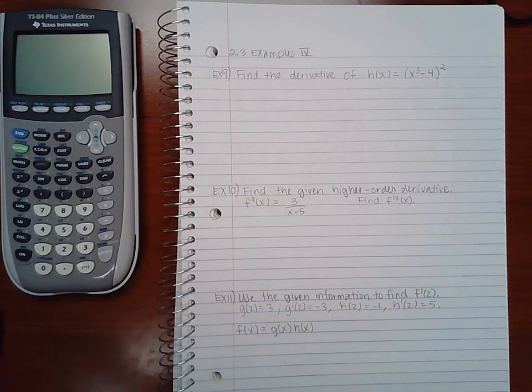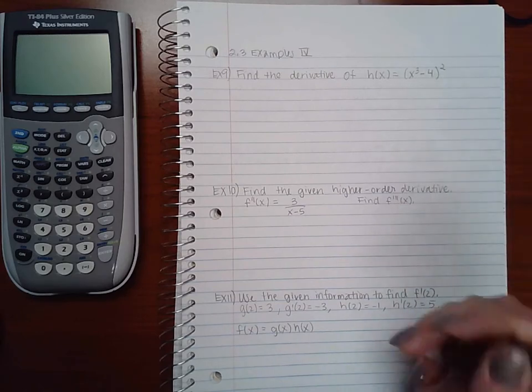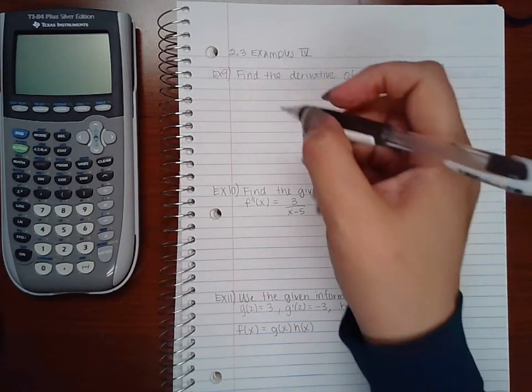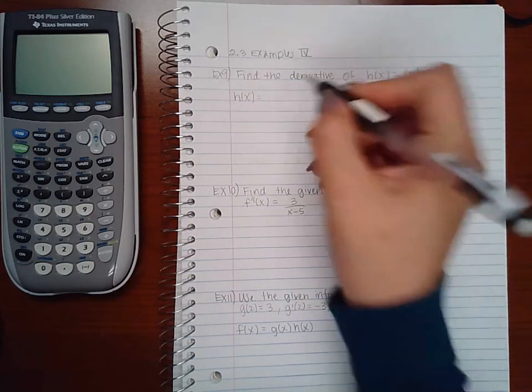This is examples part 4 of section 2.3. Example 9 says find the derivative of h(x) equal to this. Now what we need to do first is rewrite h(x) by expanding that.